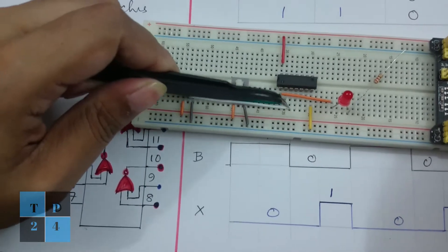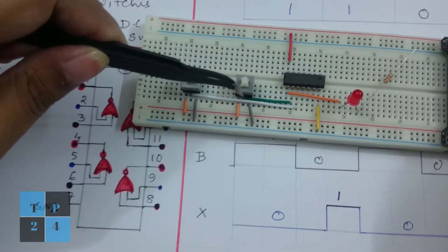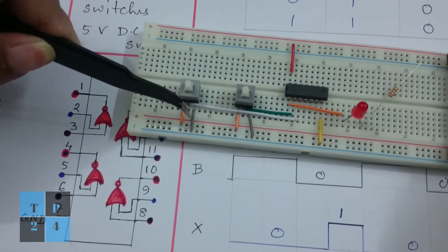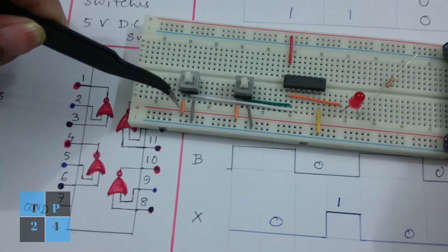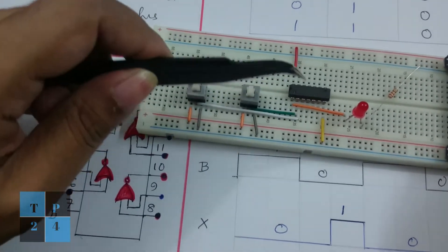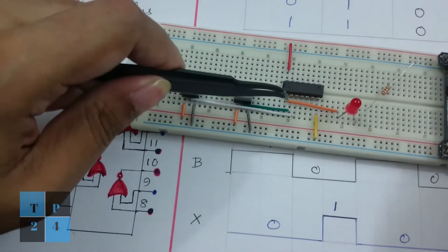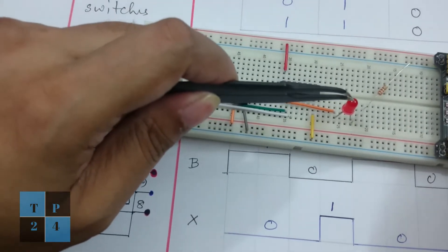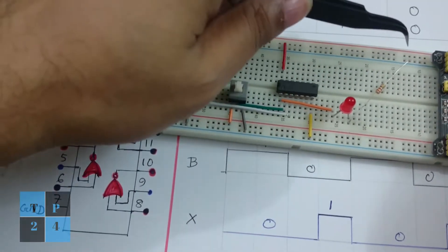So I took pin number 2 and pin number 3 as inputs A and B, and I connected the switches to the ground and positive rail. Pin number 1 I connected to the LED through a resistor to ground.